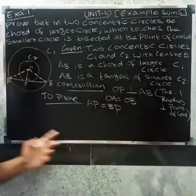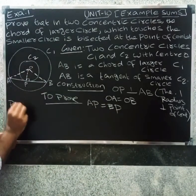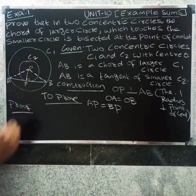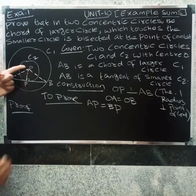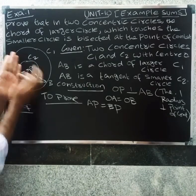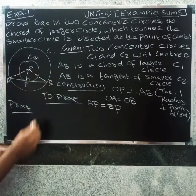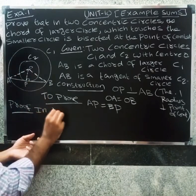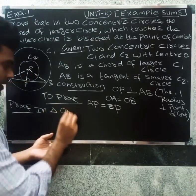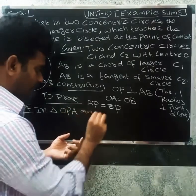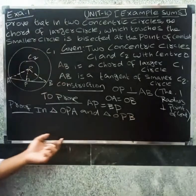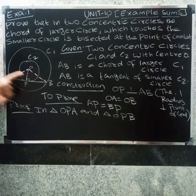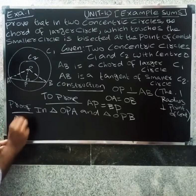In triangle OPA and triangle OPB: OP equals OP, which is the common side. OA equals OB as radii of the larger circle. Angle OPA equals angle OPB, both equal to 90 degrees since OP is perpendicular to AB.